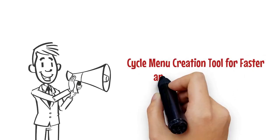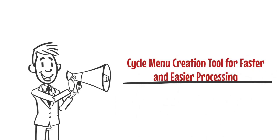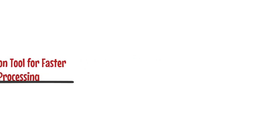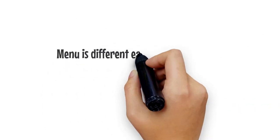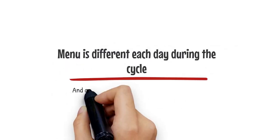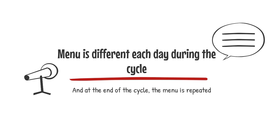Cycle menu creation tool for faster and easier processing. A cycle menu is a series of menus repeated over a specific period of time, such as four weeks. The menu is different each day during the cycle, and at the end of the cycle, the menu is repeated.